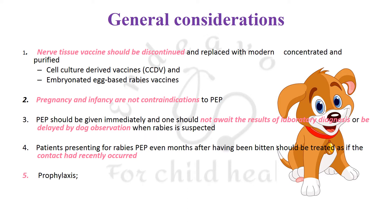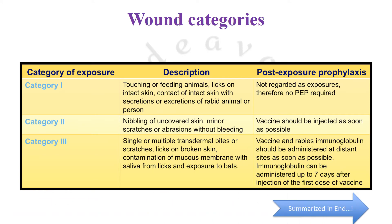Prophylaxis is of two types: first is pre-exposure prophylaxis before the bite, and second is post-exposure prophylaxis, which is naturally more important and makes patients more apprehensive. There are three categories of wounds on contact with a suspected rabid animal. Category one is licks or touch with intact skin — no post-exposure prophylaxis required. Category two is nibbling of uncovered skin or minor scratches without bleeding — vaccine injection required as early as possible. Category three is single or multiple transdermal bites or scratches, licks on broken skin, contamination of mucous membranes with saliva, or exposure to bats — both vaccine and rabies immunoglobulin should be administered at distant sites as early as possible.